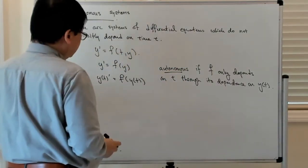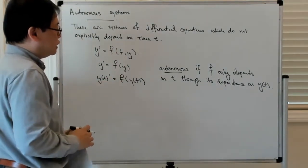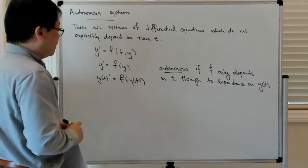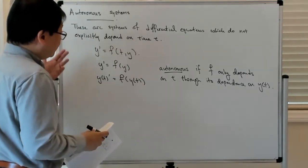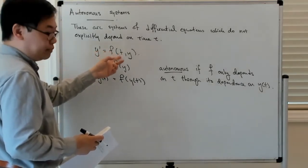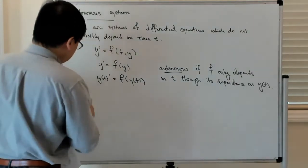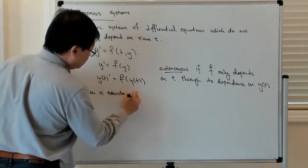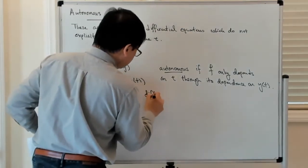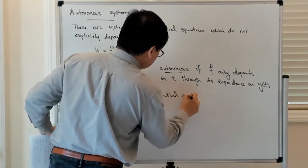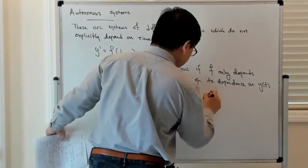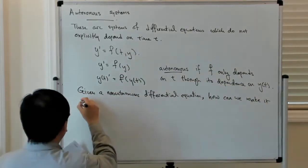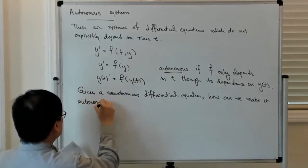The reason why you want to do this is that oftentimes if you have an autonomous system, the numerical methods for solving autonomous systems are simpler. So you can ask yourself, given a non-autonomous system, something which depends on time, how do you make it autonomous?